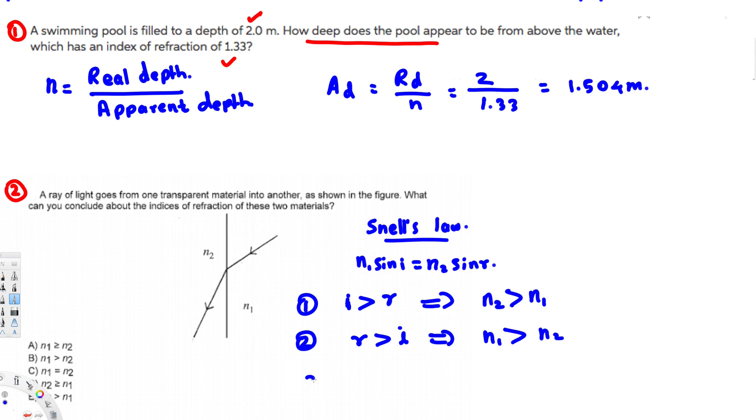Now the third condition is: if both are equal—if i is equal to r, incident angle and refraction angle are equal—then n1 should be equal to n2. So these are the three conditions.